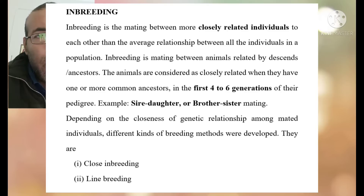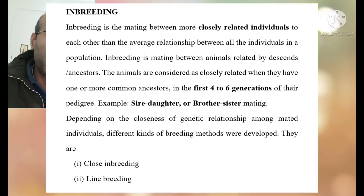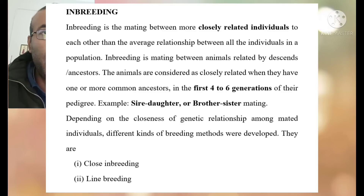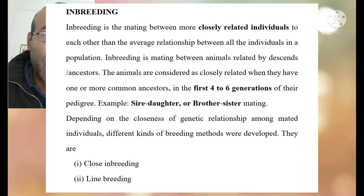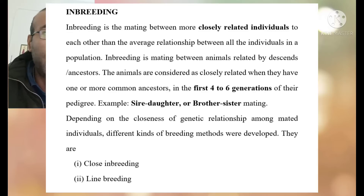Animals are considered closely related when they have one or more common ancestors in the first four to six generations of their pedigree. For example, sire and daughter mating, and brother and sister mating are examples of close mating.